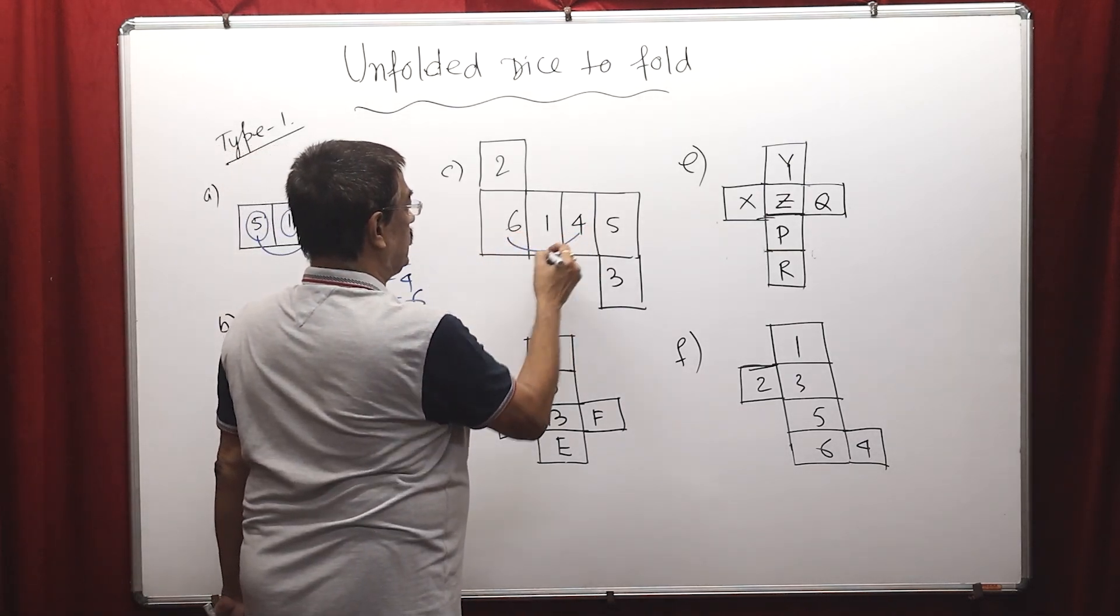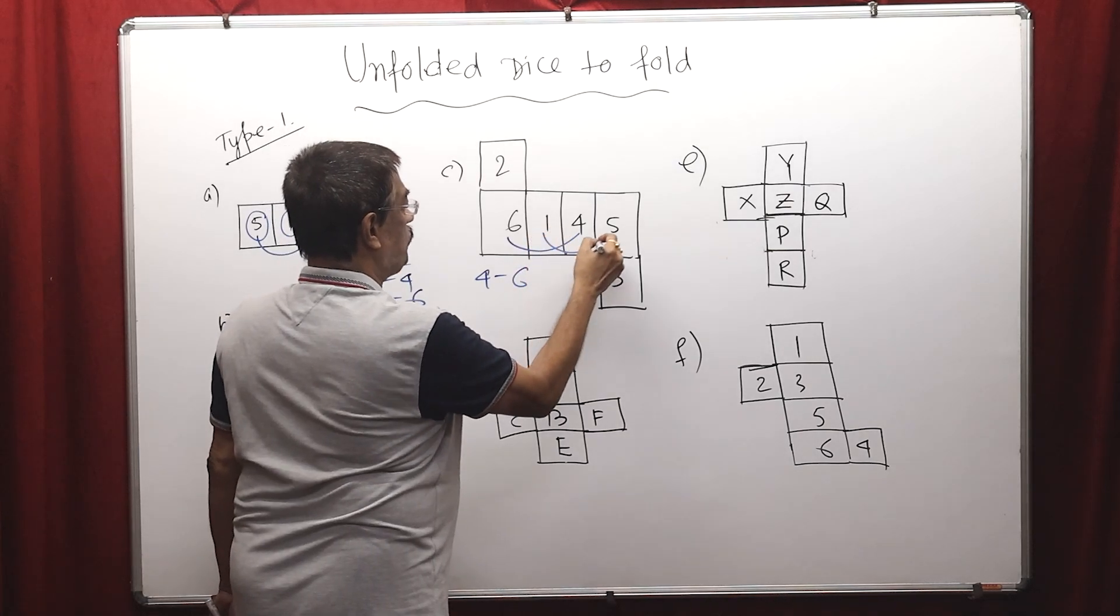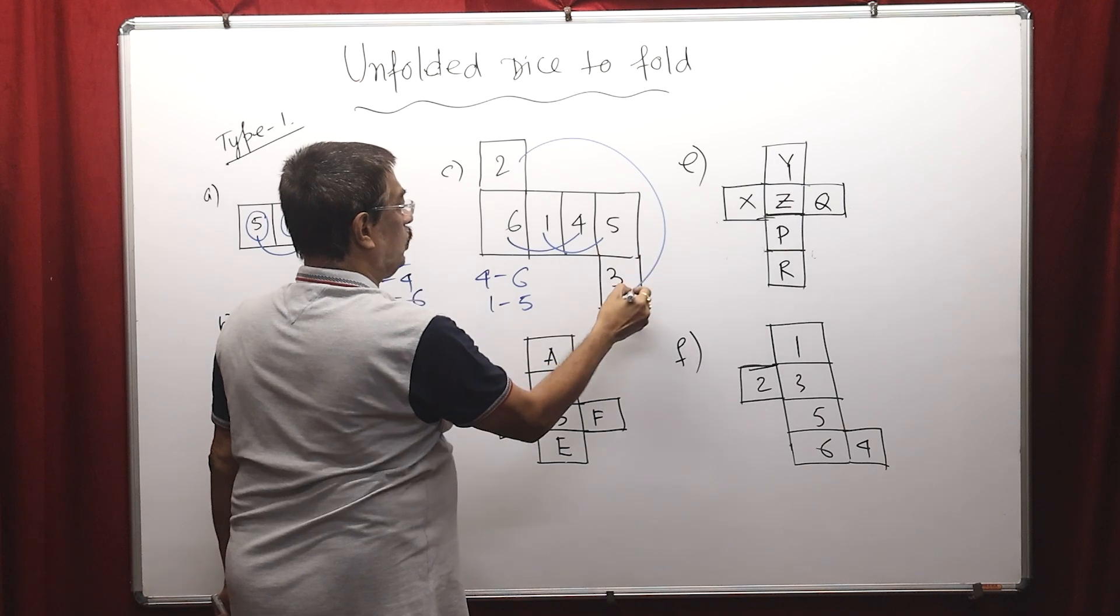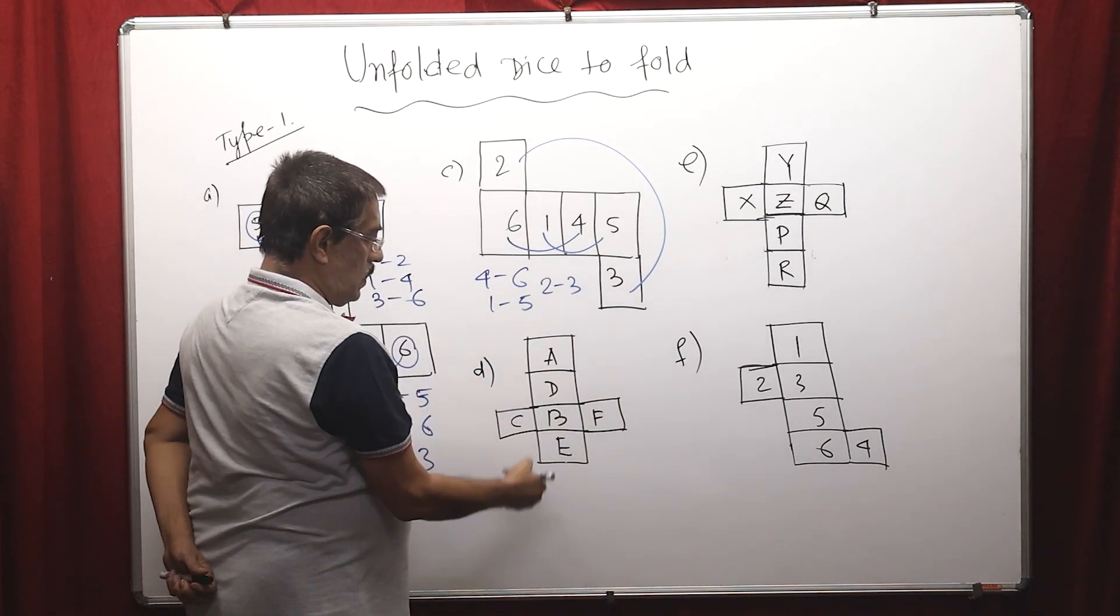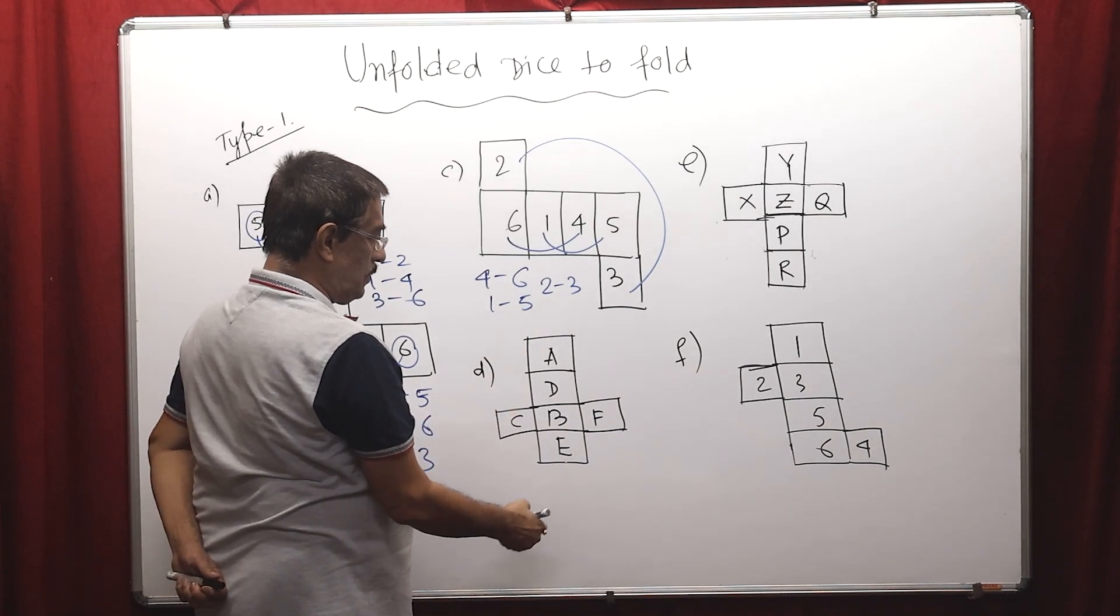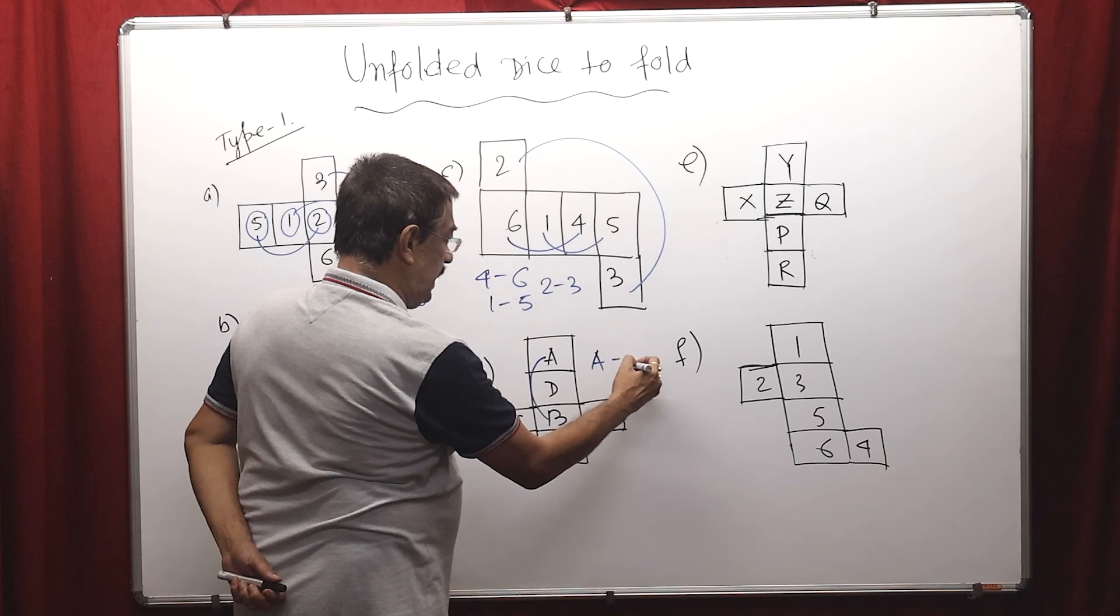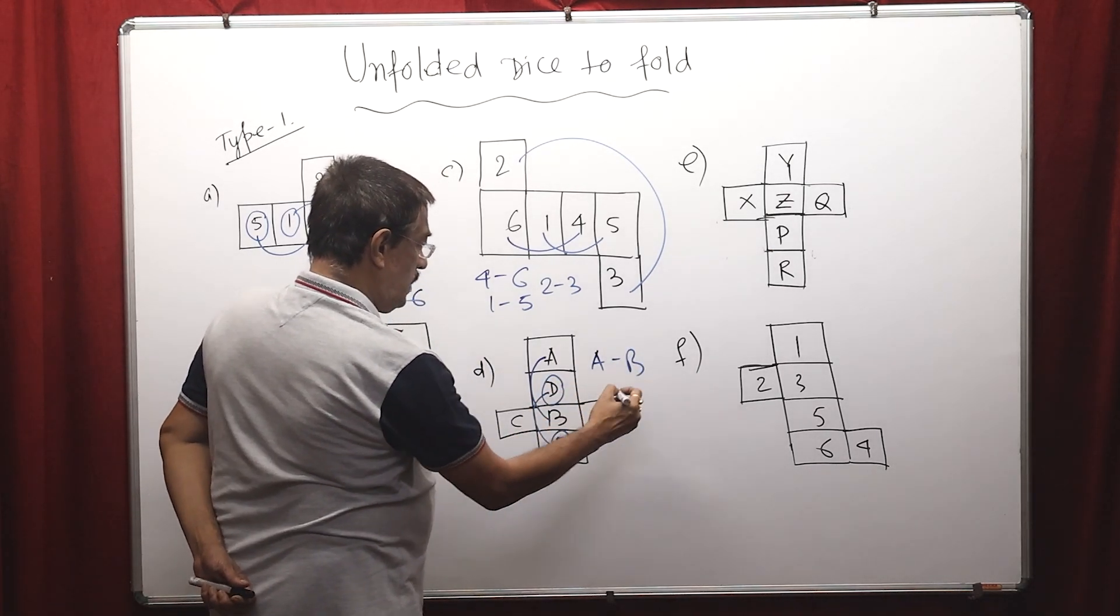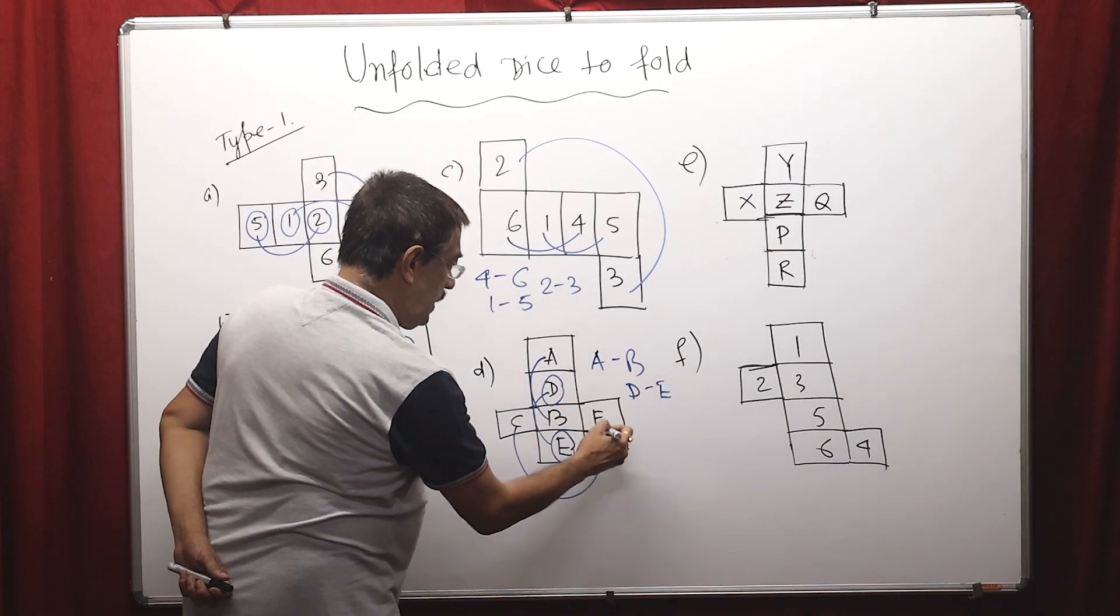From here, this to this: 4 opposite 6 and 6 opposite 4, 1 to 5, 1 opposite 5, 5 opposite 1, and 2 to 3, 2 opposite 3, 3 opposite 2. Similarly here, select maximum horizontal line or vertical line. This and this: A opposite B, B opposite A, D opposite A. Skip one box, D opposite E, and C opposite F, F opposite C.